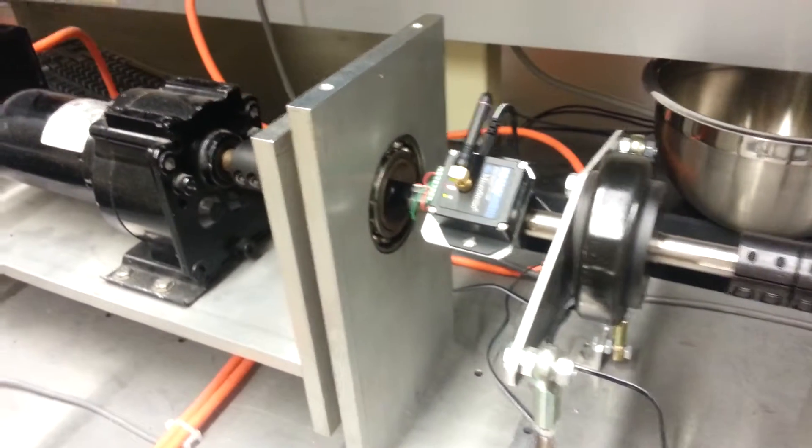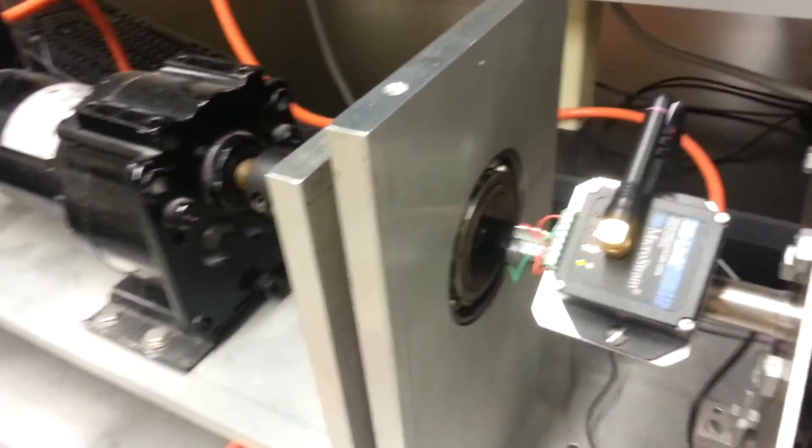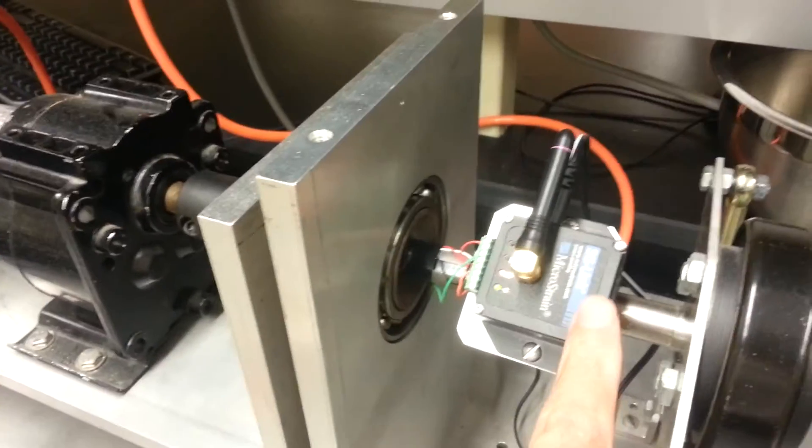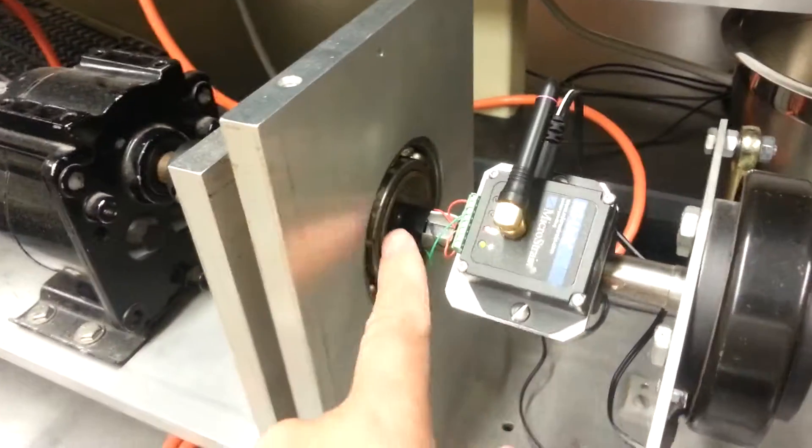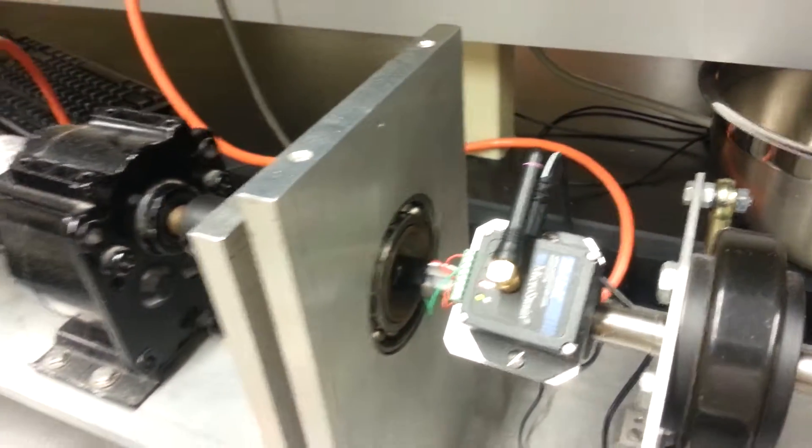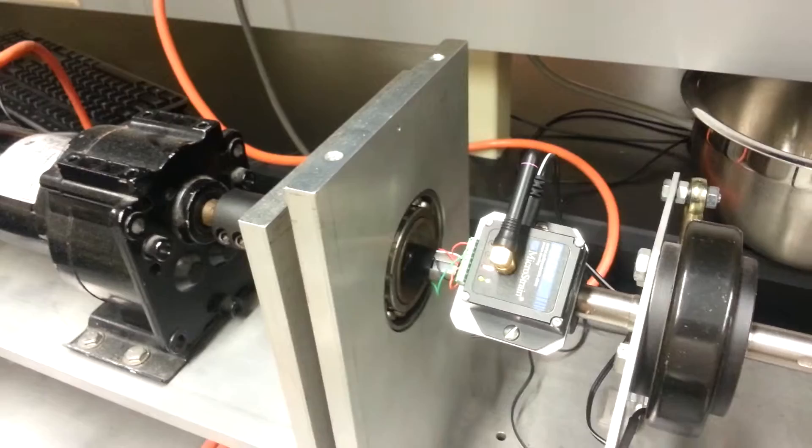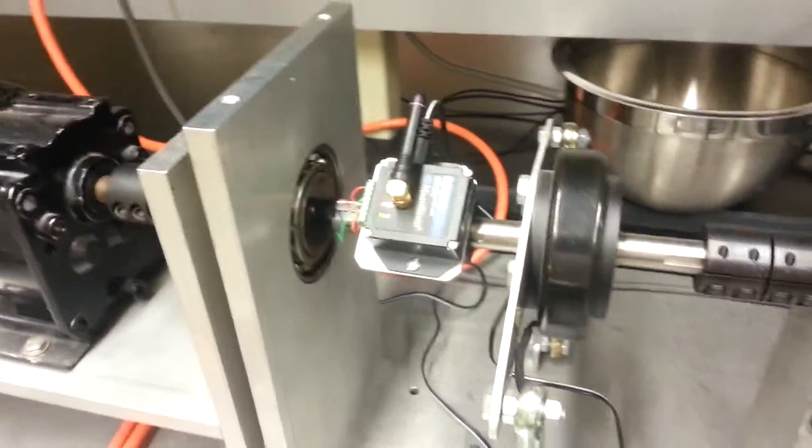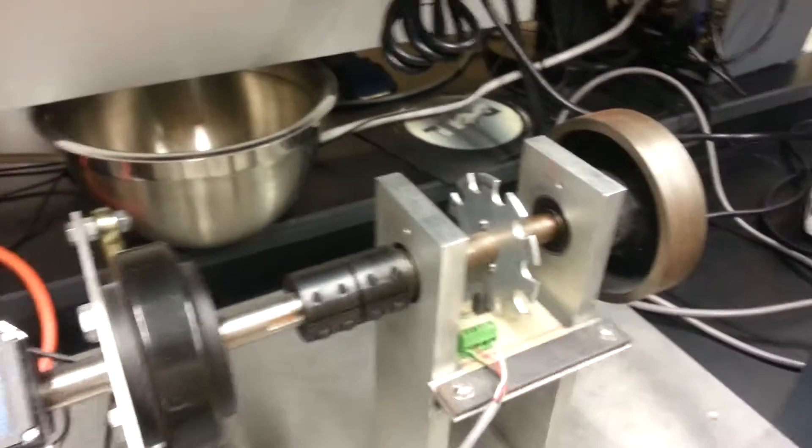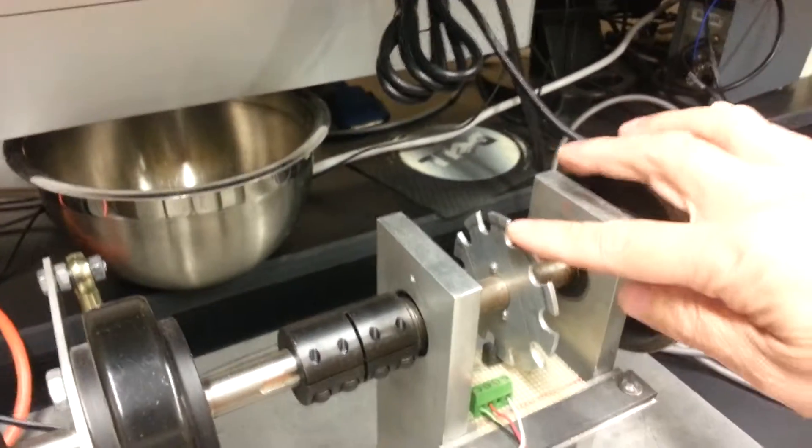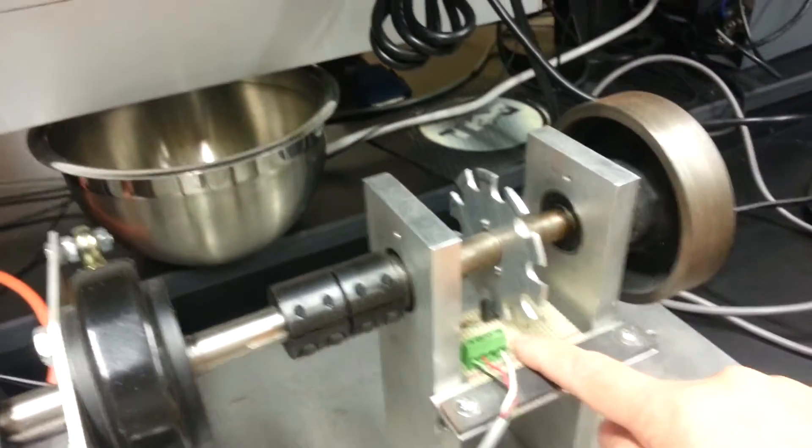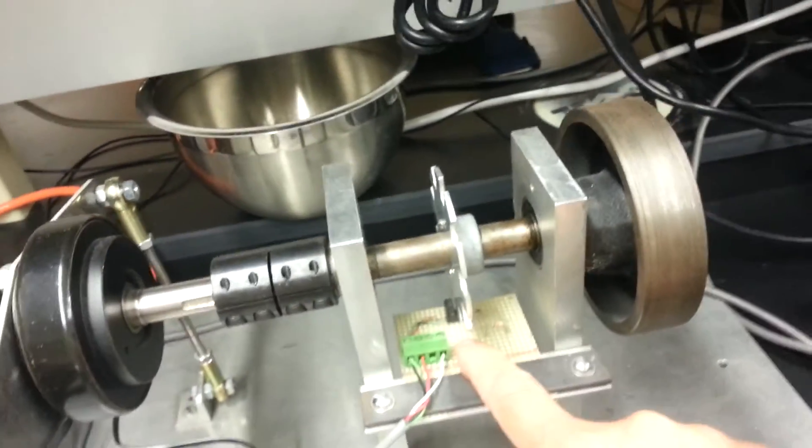In order to measure the torque in the shaft, we have a wireless transmitter and also a strain gauge setup in the system. The rotation speed is measured by a wheel and optical sensors.